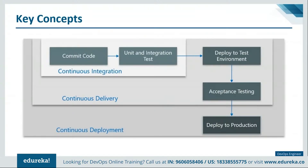Let's discuss continuous integration, delivery, and deployment. With continuous integration, the moment any developer commits a change in the source code, the CI server like Jenkins pulls that code, prepares a build — meaning compiling the source code, validating it, installing packages, unit testing, integration testing, static code analysis, and packaging the application into an executable file. When you deploy the application onto test environments for end-user testing or user acceptance testing in an automated fashion, that is continuous delivery. When the application is then deployed onto production servers for release in an automated fashion, that is continuous deployment.